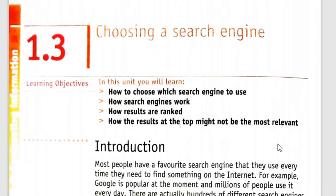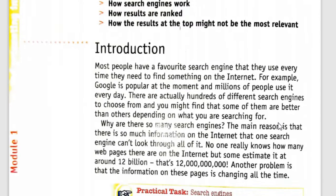In this lesson we're going to learn how to choose which search engine to use, how search engines work, how results are ranked, and how the result at the top might not be the most relevant. Most people have a favorite search engine they use every time they need to find something on the internet. For example, Google is very popular and billions of people use it every day. There are actually hundreds of different search engines to choose from, and some of them are better than others depending on what you are searching for.